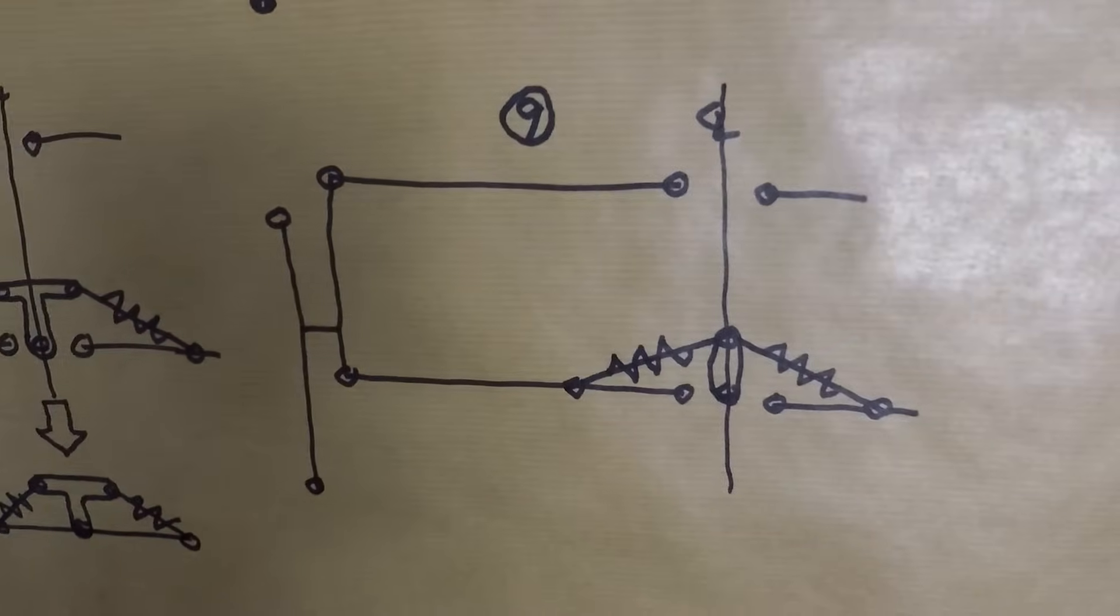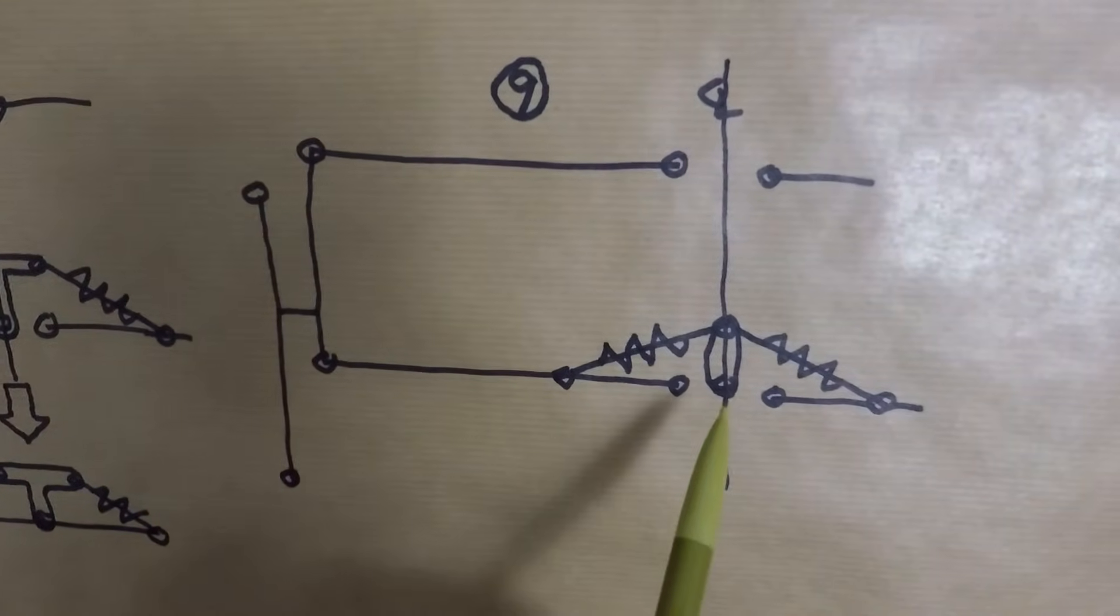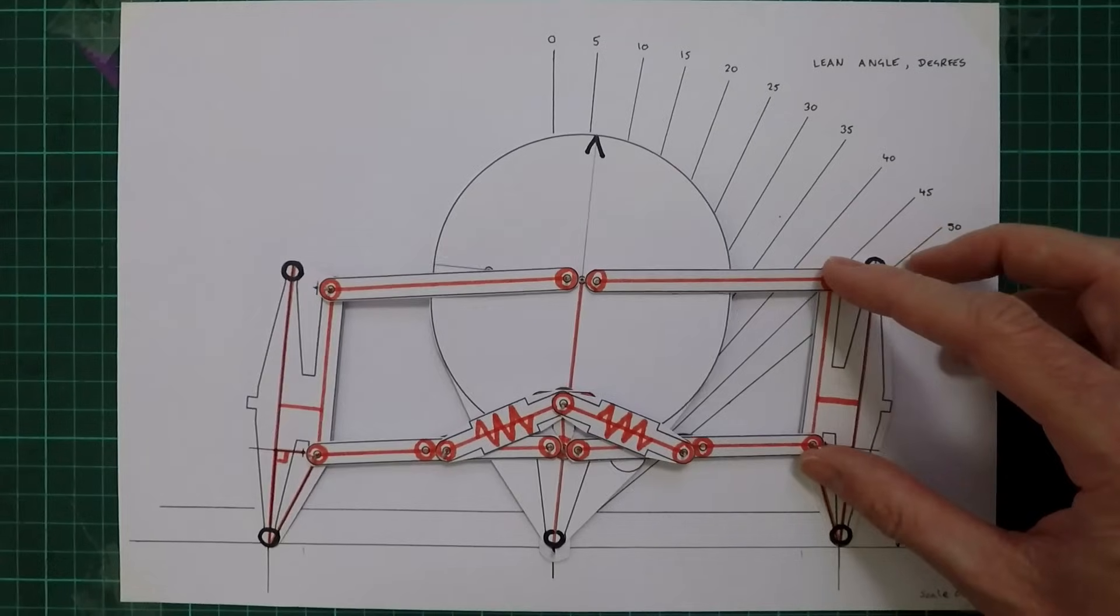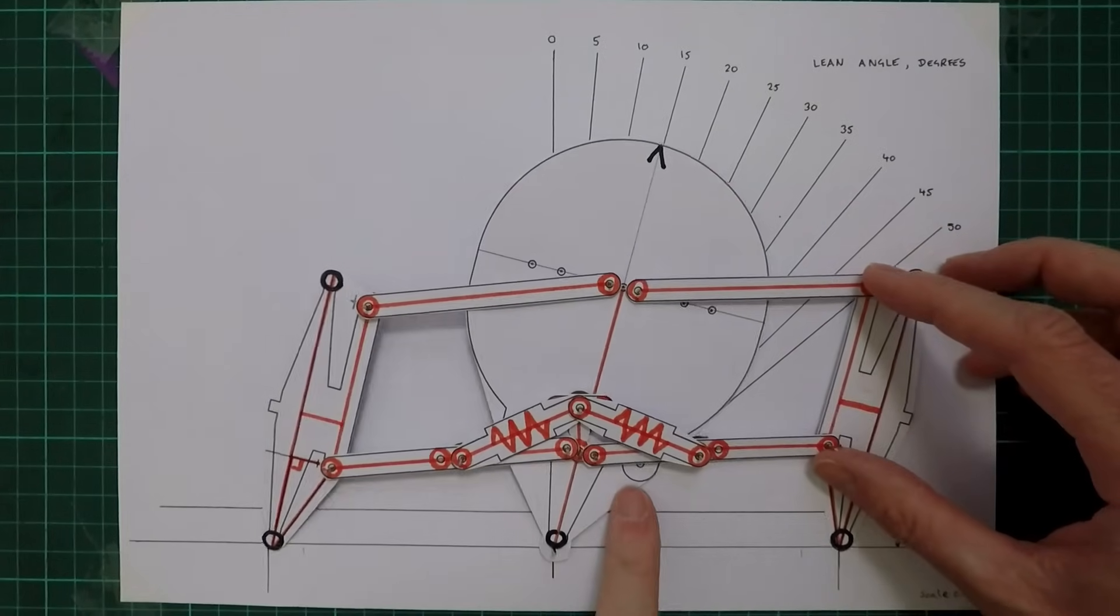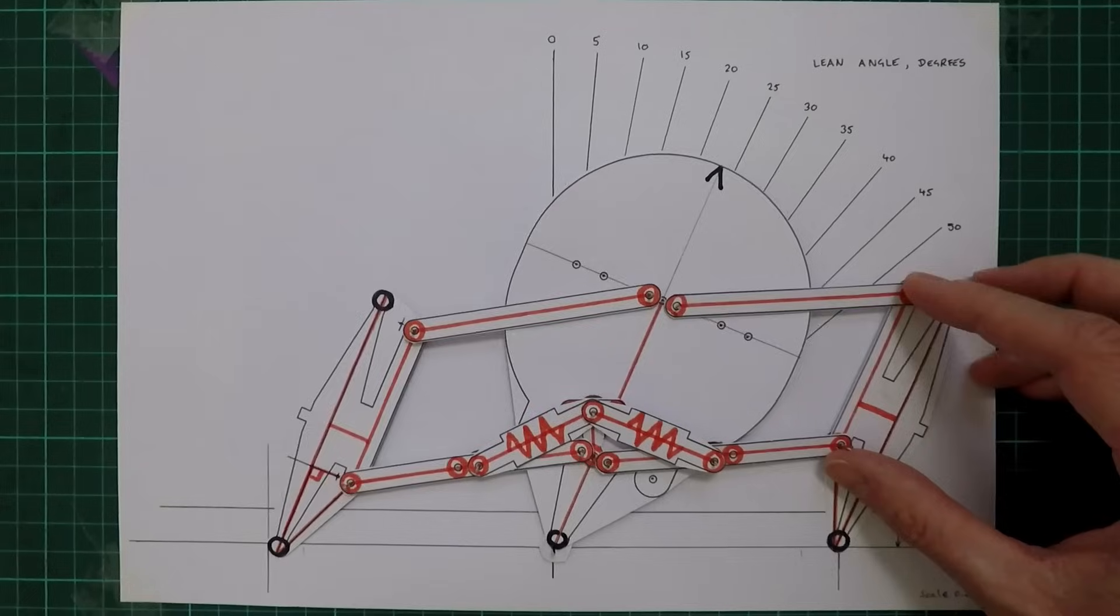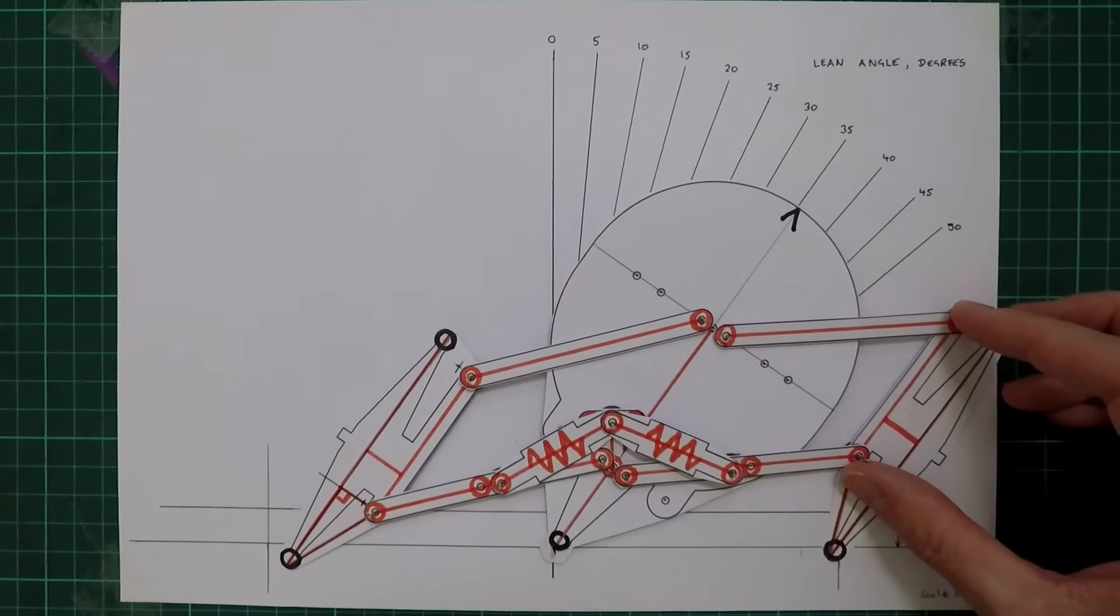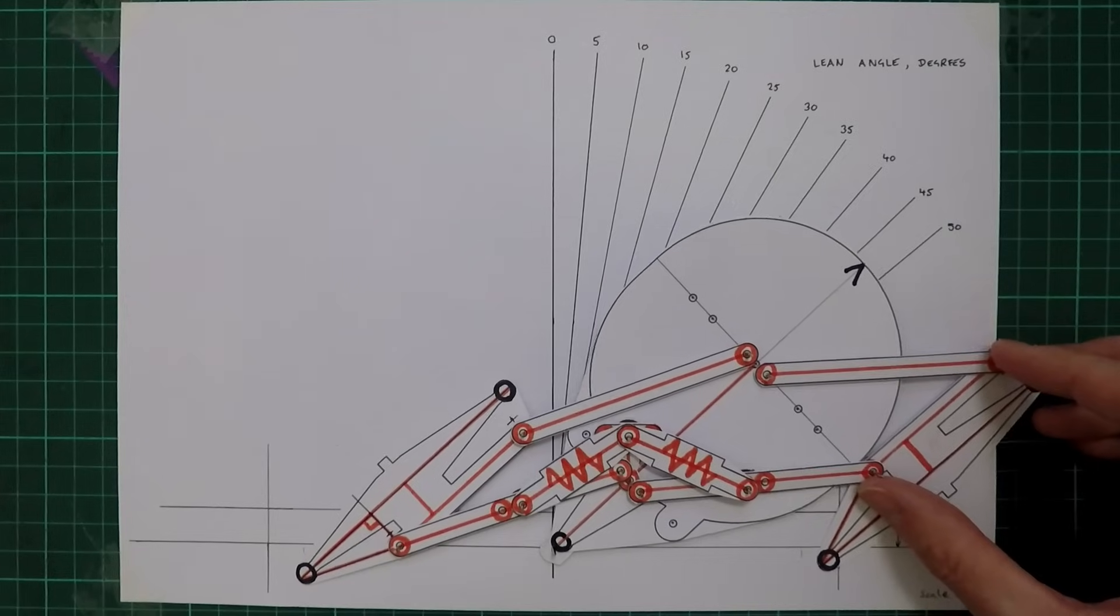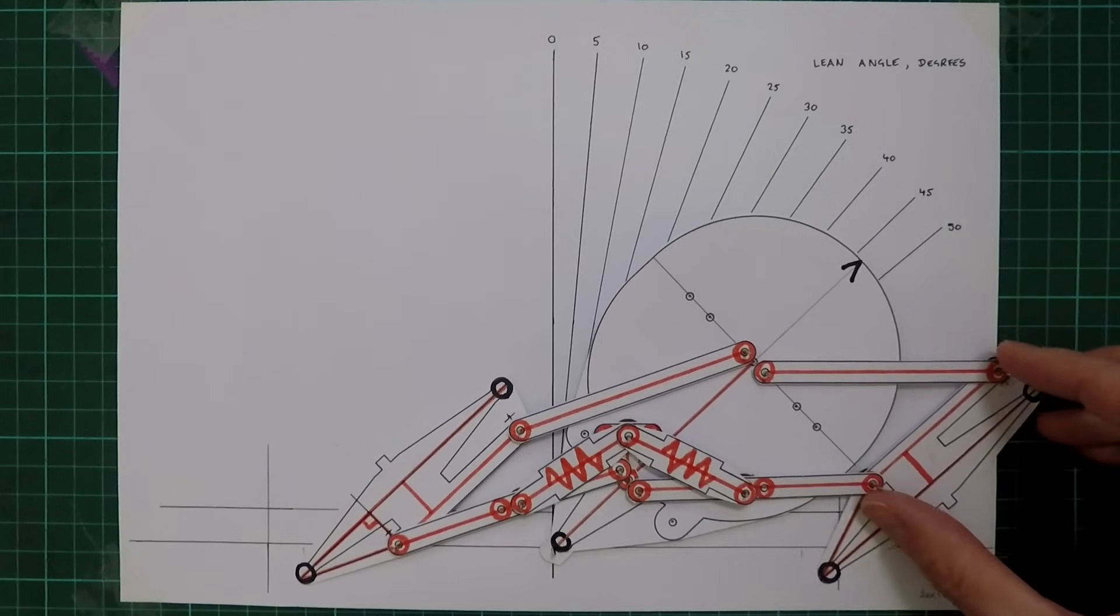Finally, let's try the same design but with the inner end of the shocks connected to the same axis. In practice the shocks will have to be offset a little to achieve this. At 35 degrees of tilt we still have the body rise and at 45 it's even worse with lots of tyre scrub. Suspension compression actually helps as it offsets the body rise and the scrub to some extent but this is not an ideal situation.